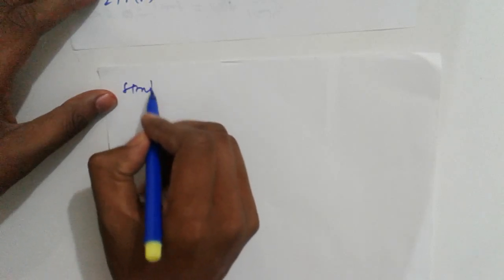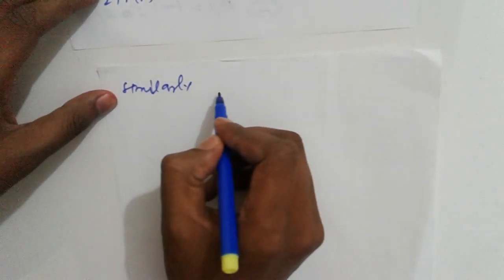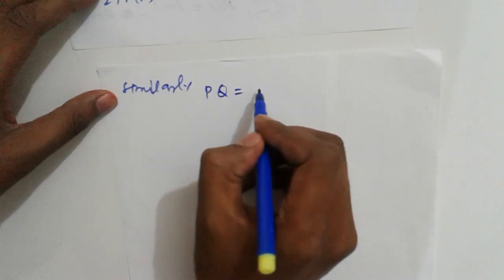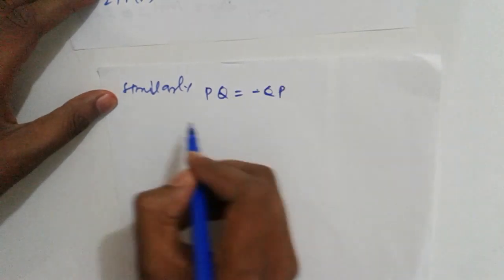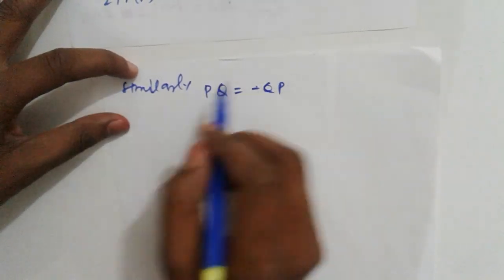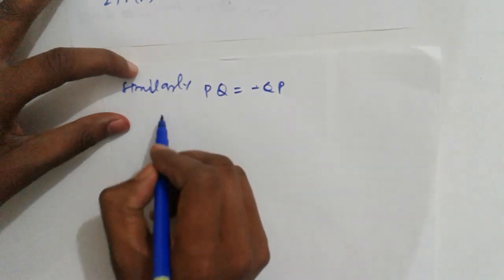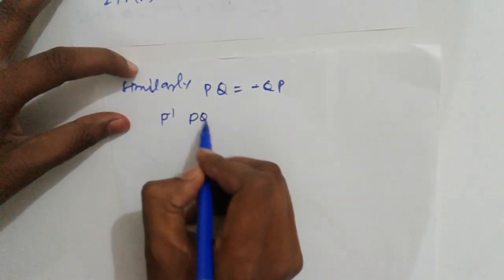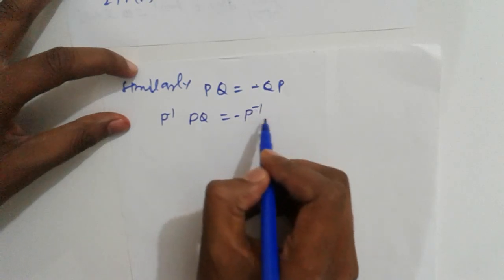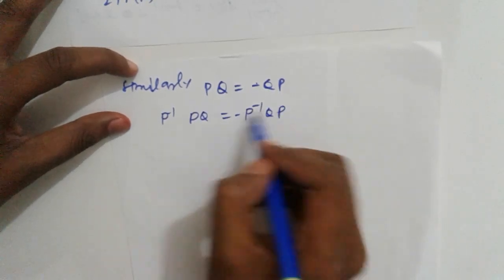Similarly, if PQ equals minus QP, multiply by P inverse. P inverse P equals minus P inverse QP.